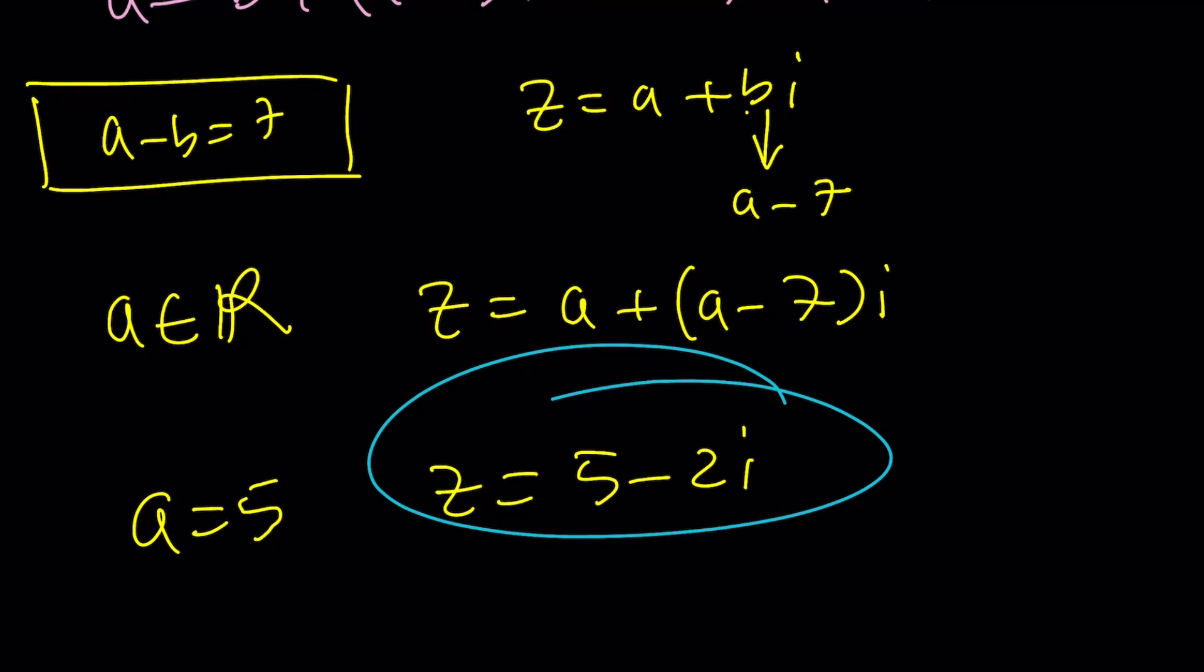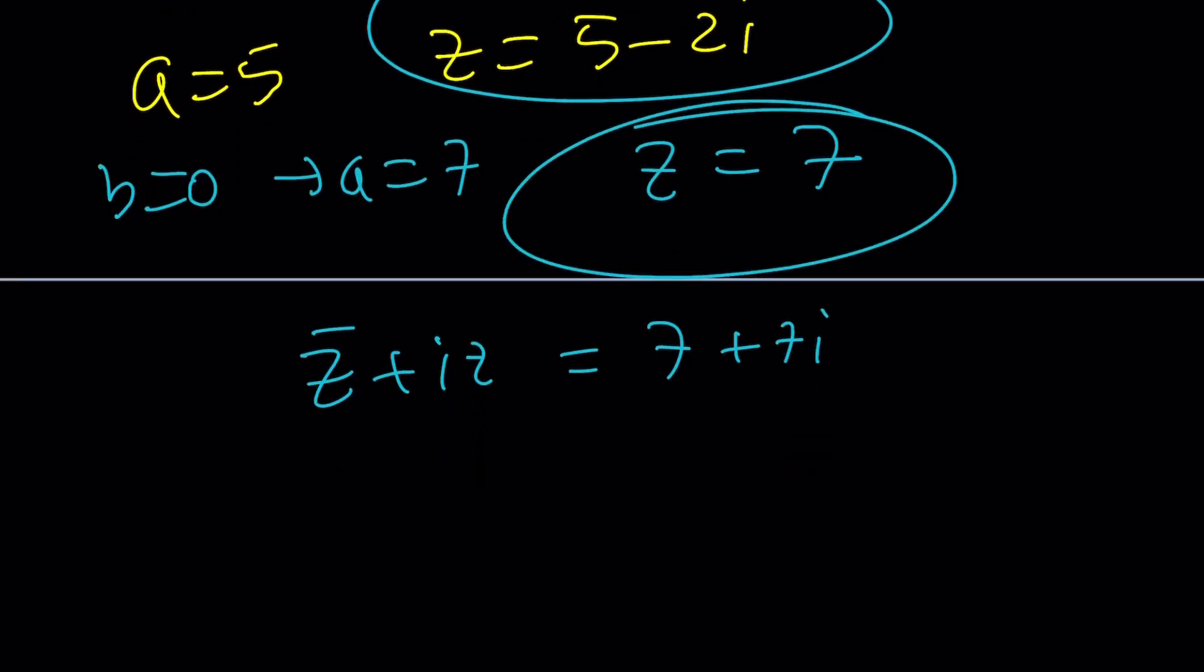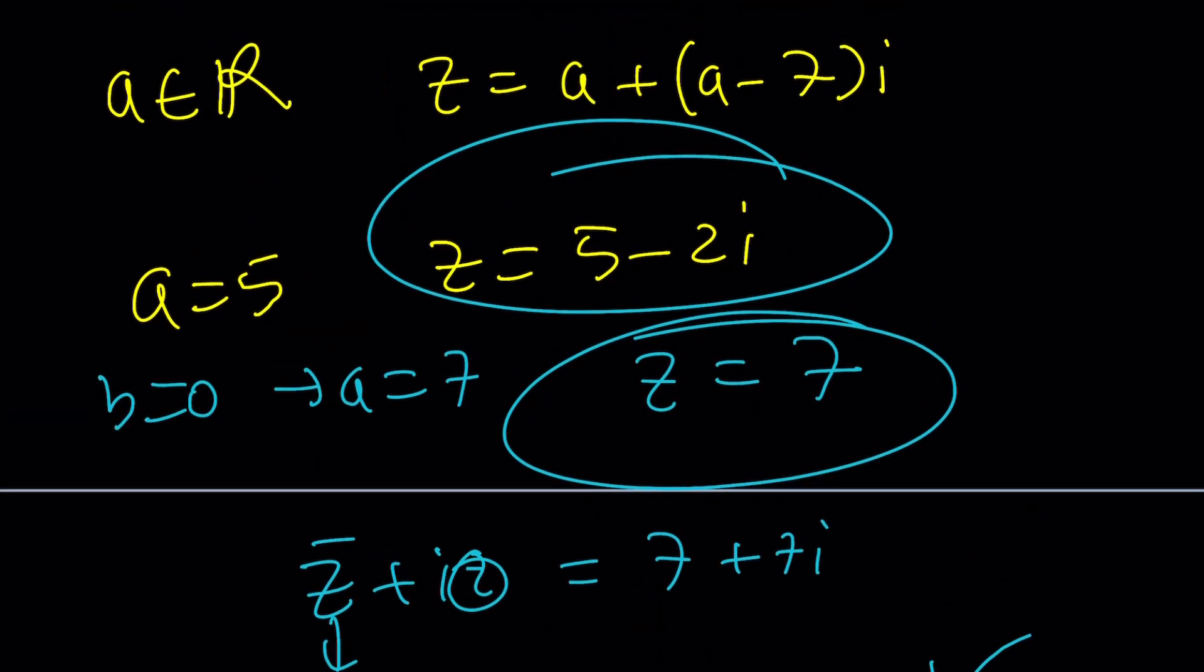What happens if A is equal to 0? Or B is equal to 0? If B is 0, then A is going to be 7. So Z is just going to be 7. Does 7 really work? Are you sure about that? Let's check it out. Z bar plus IZ equals 7 plus 7I. And now, if Z is 7, that's a real number, and its conjugate is itself, so Z bar is going to be 7. Z is 7, 7I equals 7 plus 7I. That's correct. It's an identity. So, it works, obviously.